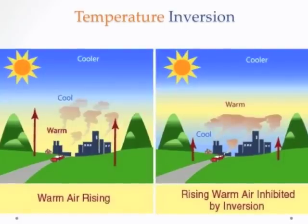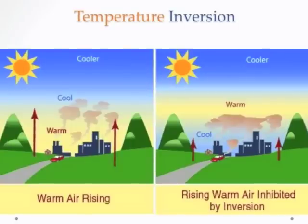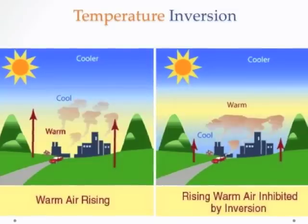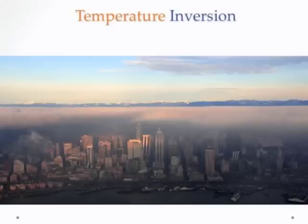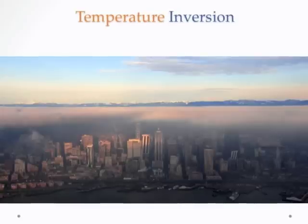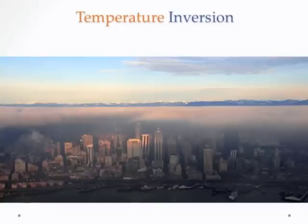However, if there is a temperature inversion — a warm layer sitting above the surface — then the dirty air cannot rise up, and you get a pollution problem. This is called a temperature inversion. You can actually see where the inversion layer is in the photo: it's above that dirty, smoggy layer, which traps the dirty air within the lower part of the troposphere, and this can be the cause of a major episode of air pollution or smog.